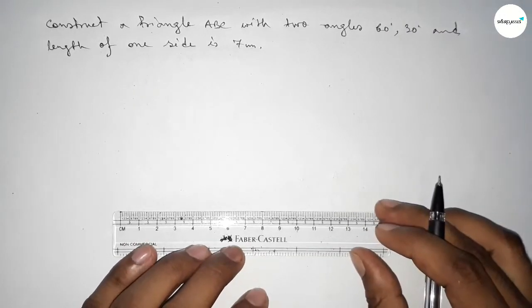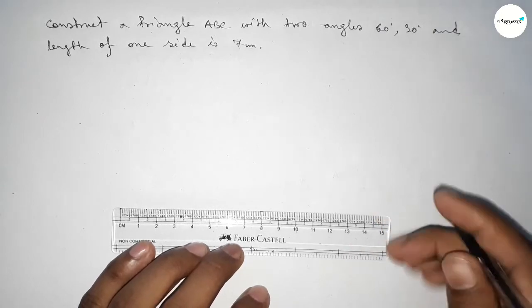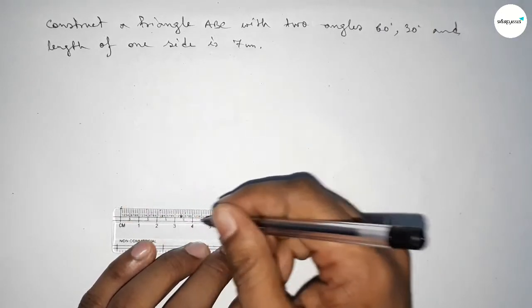So let's start the video. First of all, we have to draw here a line of length 7 centimeters. So this is a 7 centimeter line, and taking here point B and here C.